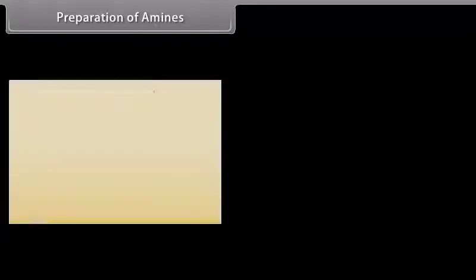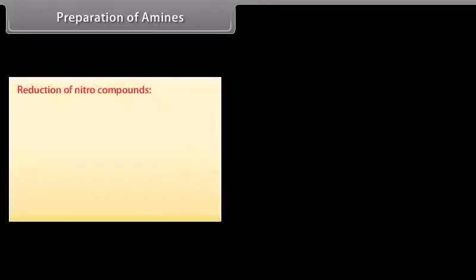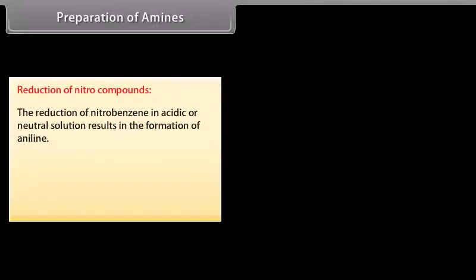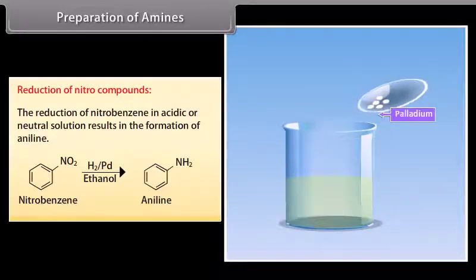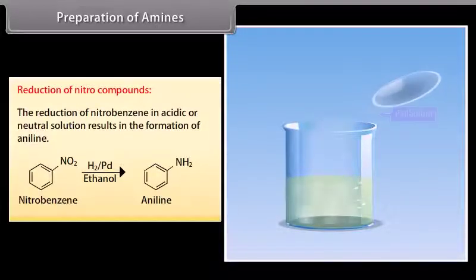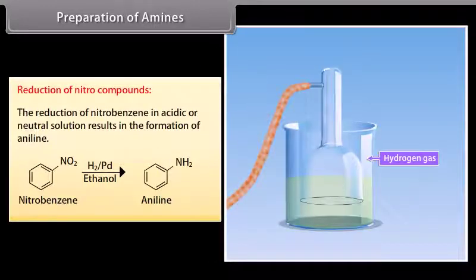Preparation of amines — Reduction of nitro compounds: The reduction of nitrobenzene in acidic or neutral solution results in the formation of aniline. Nitrobenzene is reduced to aniline by passing hydrogen gas in the presence of finely divided palladium.